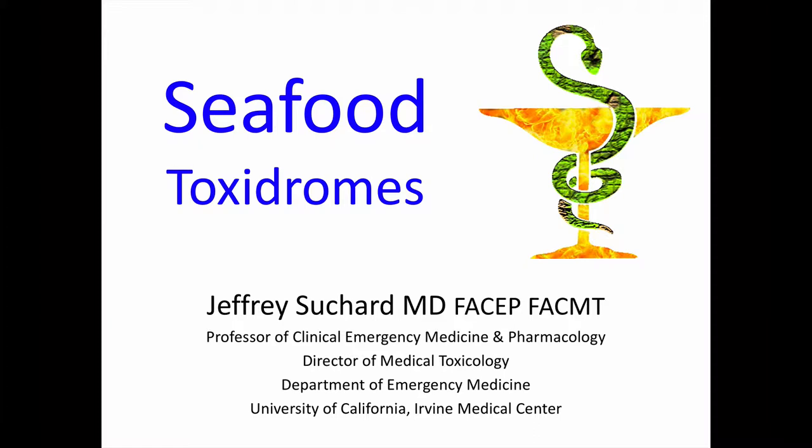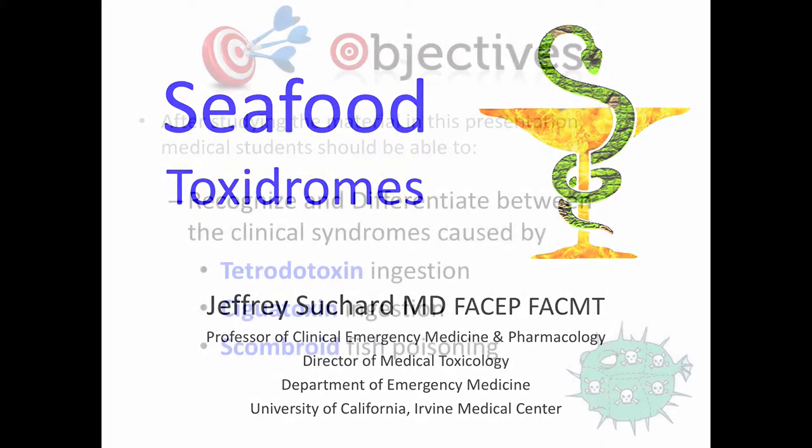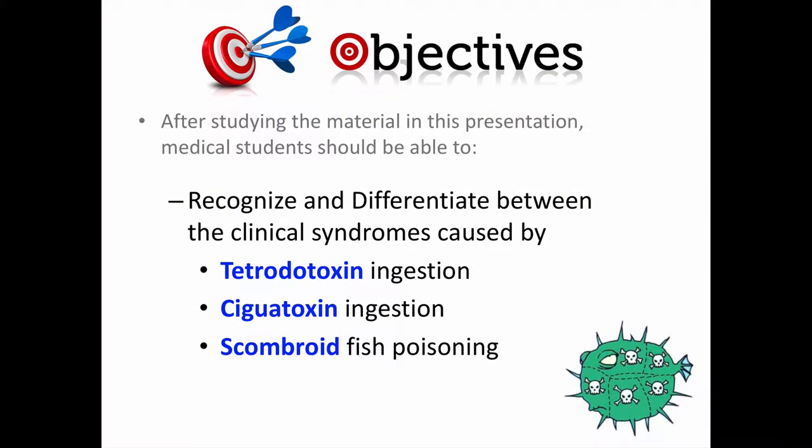The toxic syndromes, or toxidromes, we're going to discuss here are not particularly common, but they can be pretty dramatic. I imagine you'll see between zero to two questions total on this material on the NBME Pharmacology Subject Exam and the USMLE Step 1 exam. The objectives of this presentation are that after studying this material, medical students should be able to recognize and differentiate between the clinical syndromes caused by ingestion of tetrodotoxin, ciguatoxin, and scombroid fish poisoning.